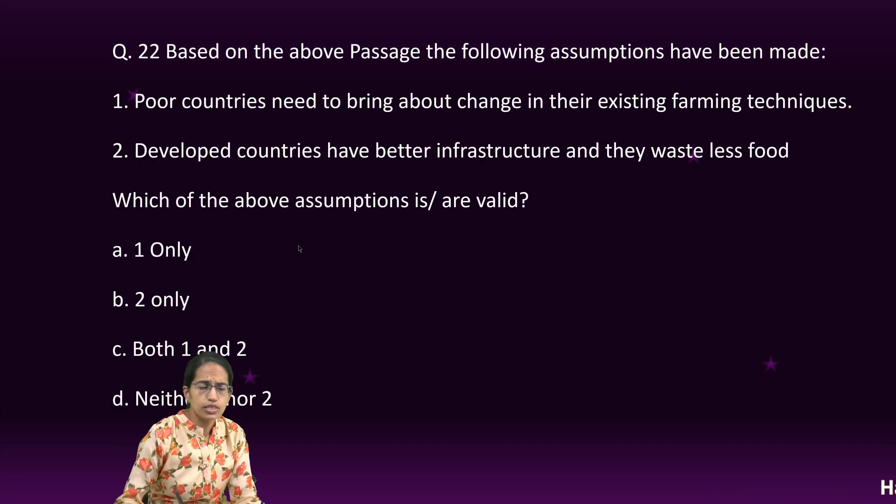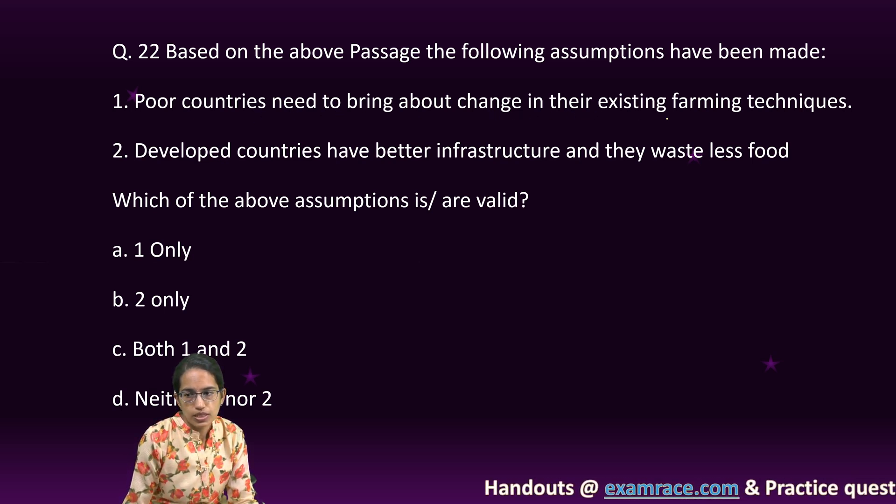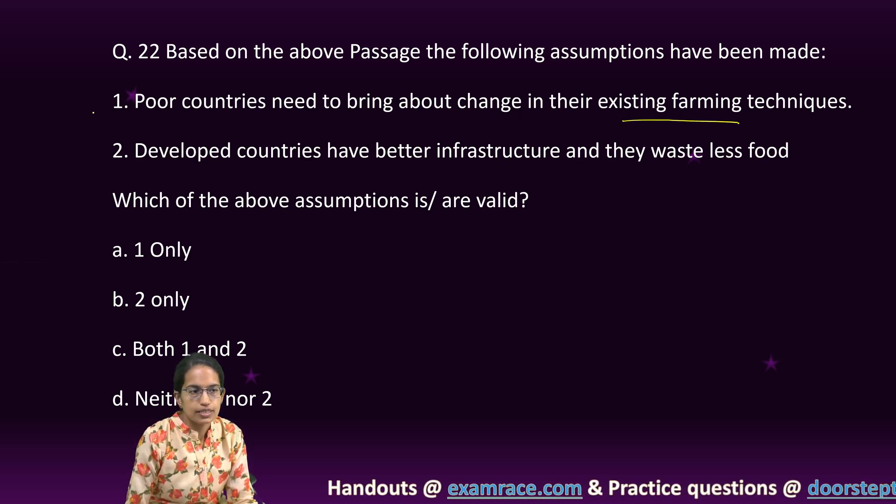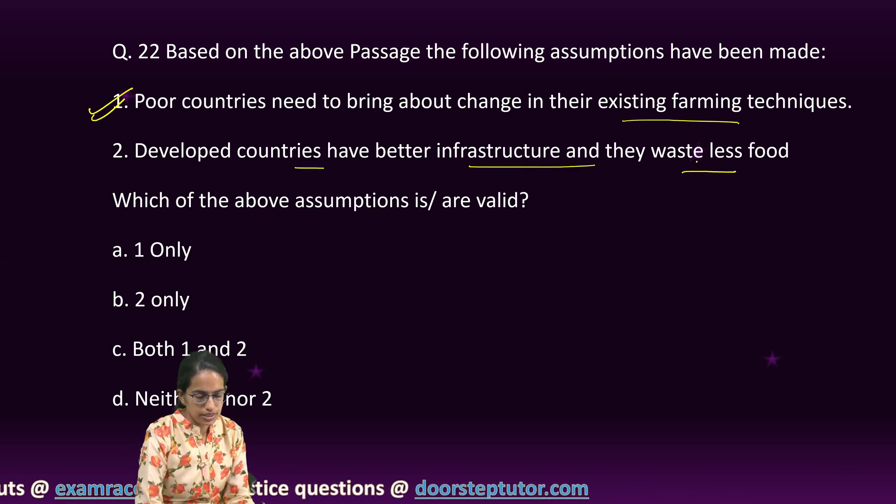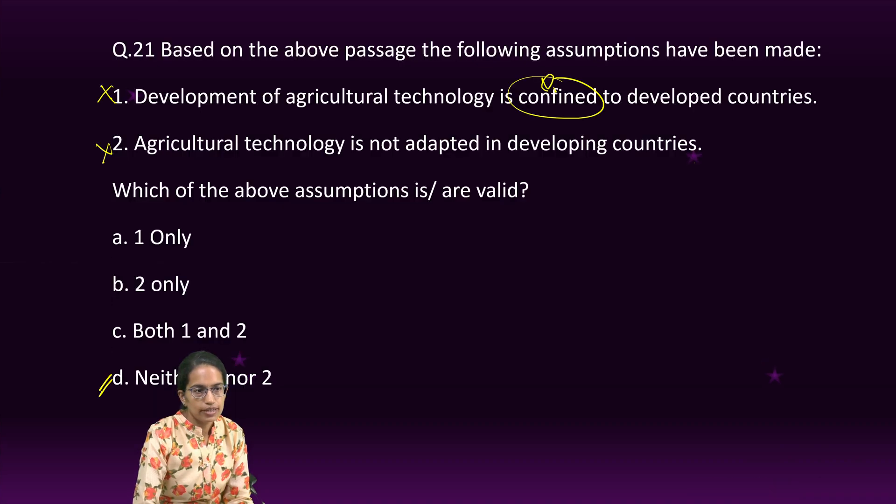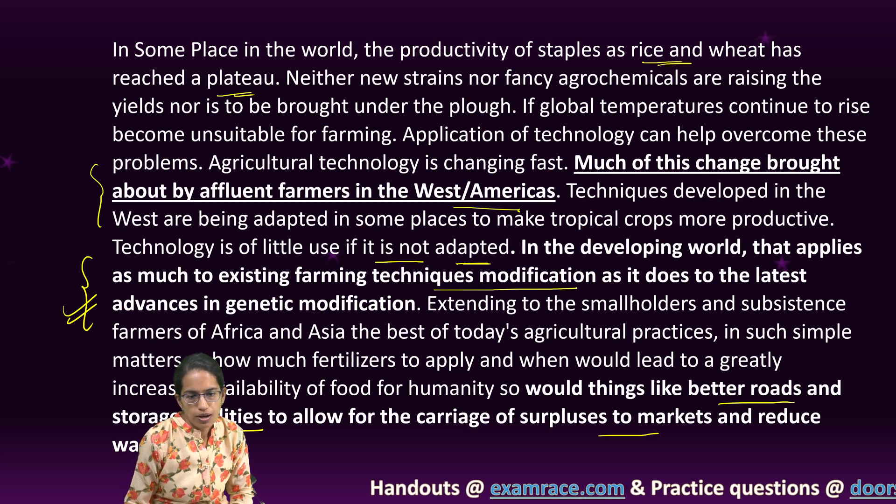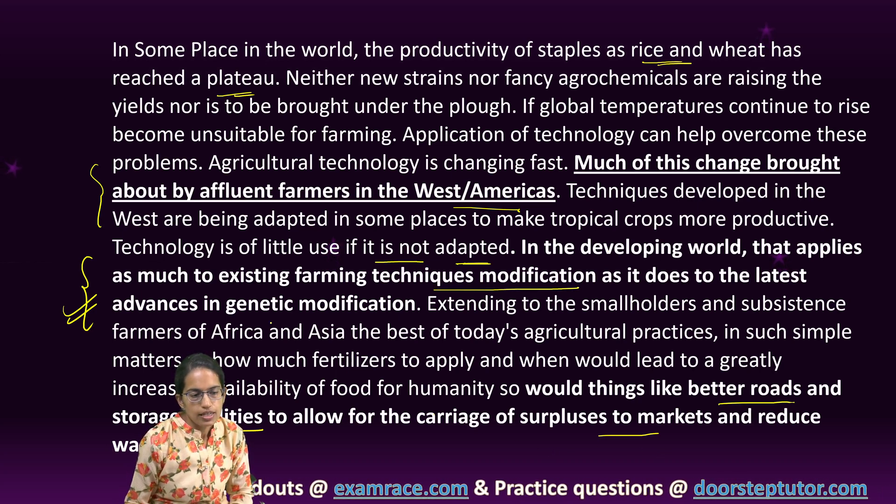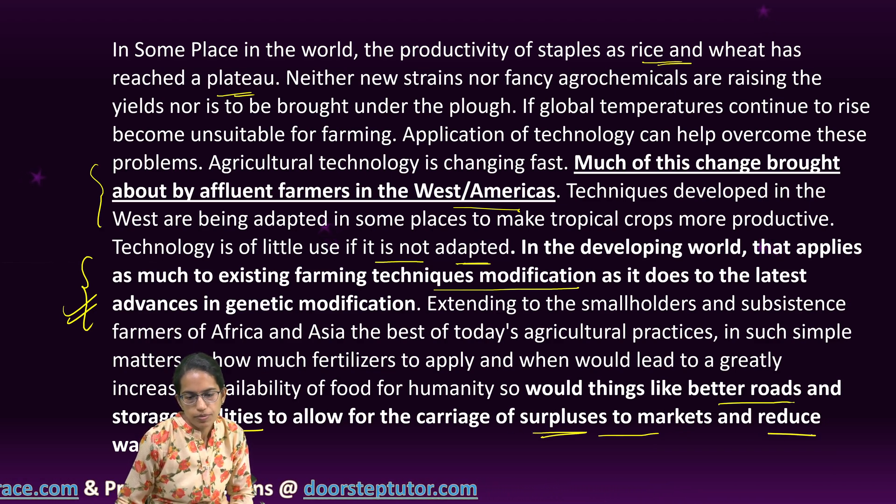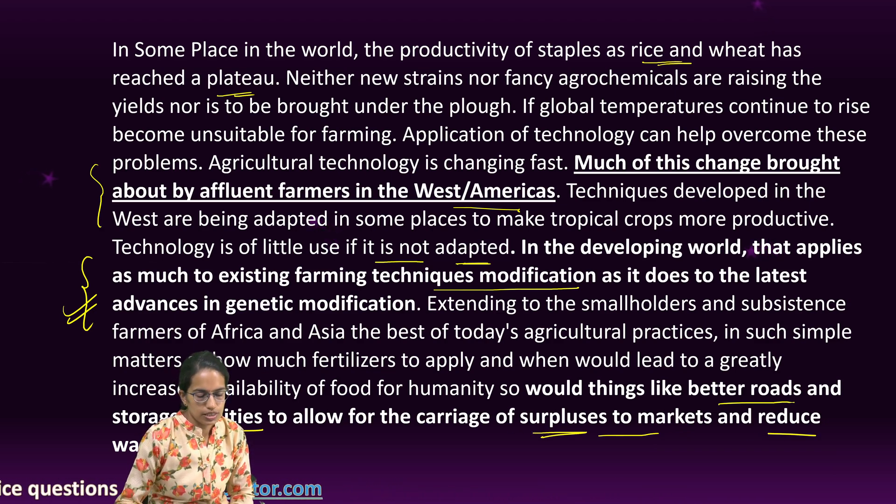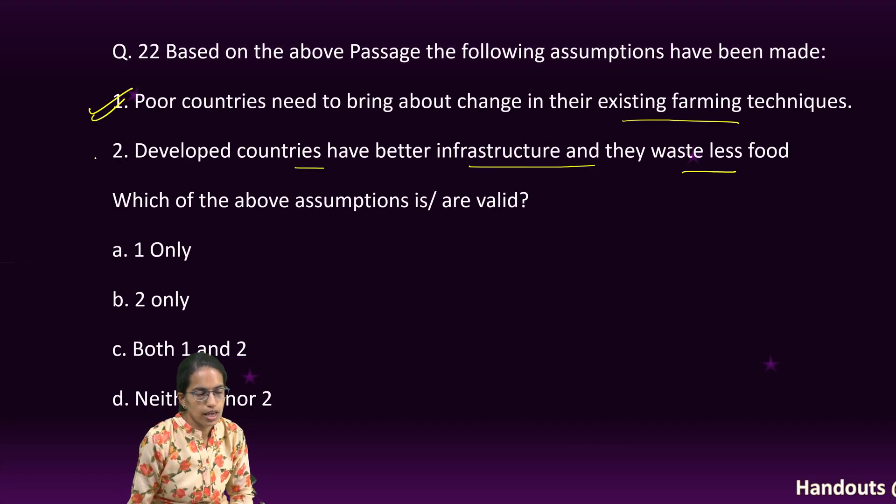Another question based on the same thing is, another assumption, poor countries need to bring about a change in their existing farming practices. That's correct. And developed countries have better infrastructure and they waste less food. If we go back to the passage, it clearly says that yes, we need to bring in farm technique modifications and then they have developed the techniques to have the surplus to the market and reduce the wastage. So, both of these become the right assumptions. Both A and B, 1 and 2 are the right assumptions here.